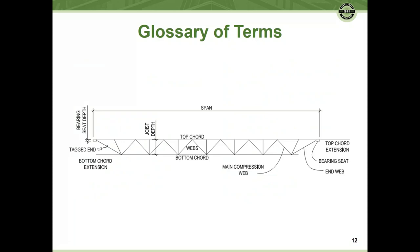The typical things we talk about when we discuss joists are the spans, the top chord — which is the top portion that can be parallel to the bottom, pitched, double-pitched, or even rolled — and the bottom chord. The webs tie the two chords together. Joist depth is measured from the outside of the top chord to the outside of the bottom chord. On one end of the joist is the tagged end, which will carry the joist tag — critical for identifying the joist when evaluating it.